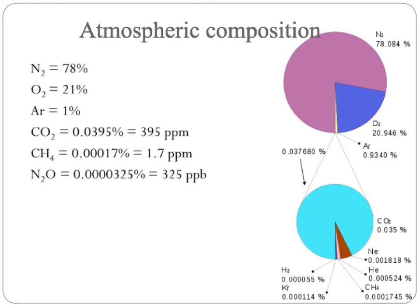This figure is showing the composition of the atmosphere. The vast majority is made up of nitrogen at 78% and oxygen at 21%. This remaining little sliver is the other stuff we're interested in: argon, carbon dioxide, methane, and nitrous oxide.